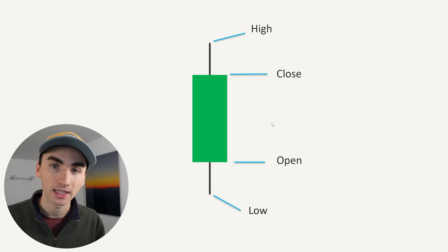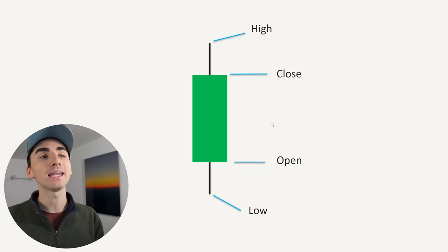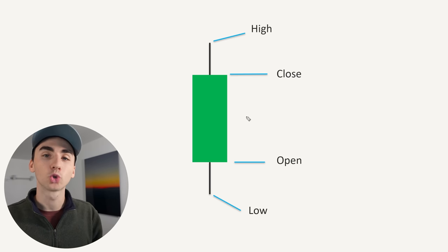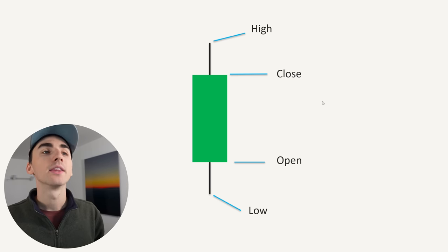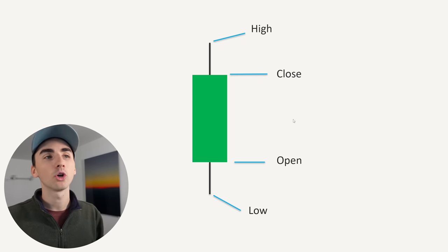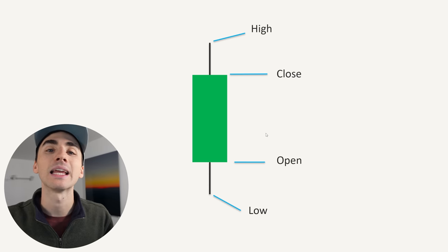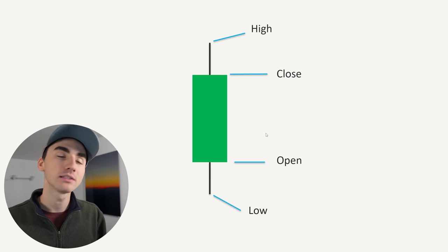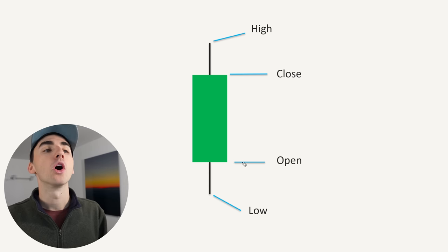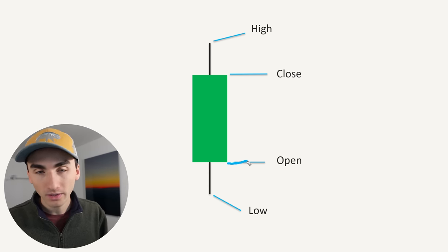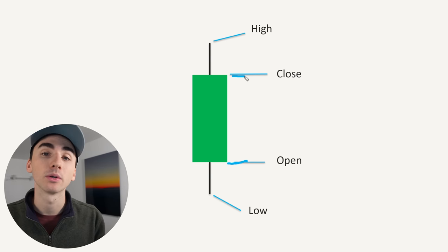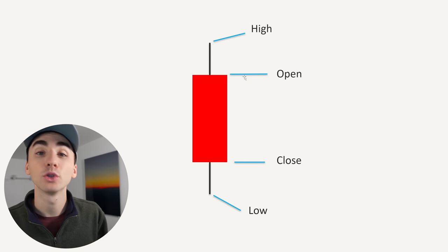That's how a candlestick would get made. And because this candle is green, that's how you determine it is a bullish candle — meaning the price opened lower at the body and then closed near the top.